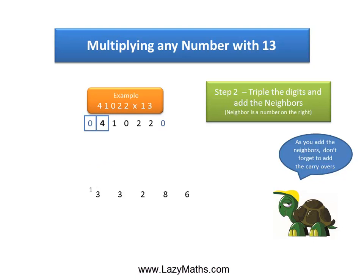And then the last step: 0 and 4. Triple of 0 is 0, plus the neighbor 4 gives us 4. Now at this step, the carry over 1 from 13 needs to be added to the 4 to make the 4 into a 5.